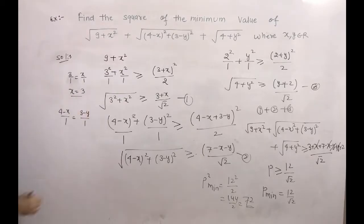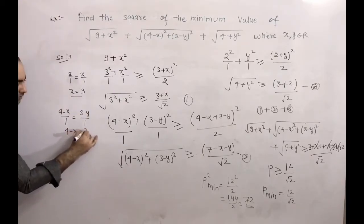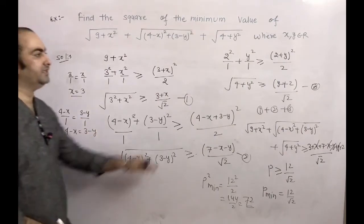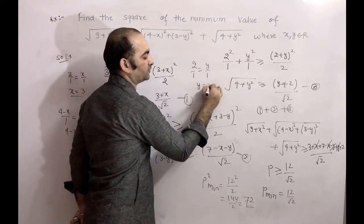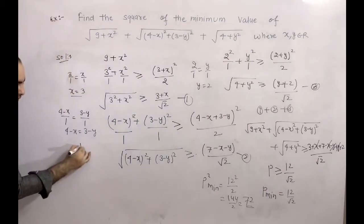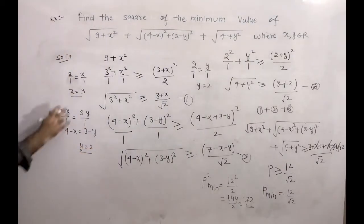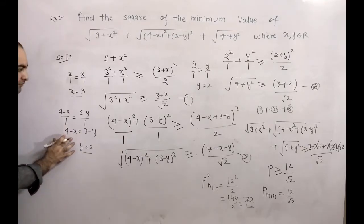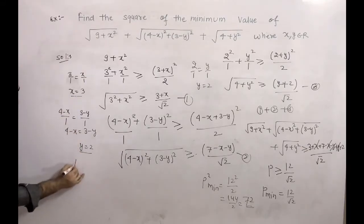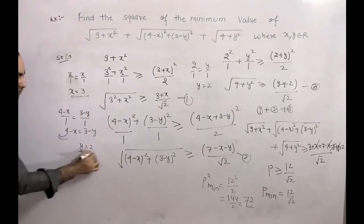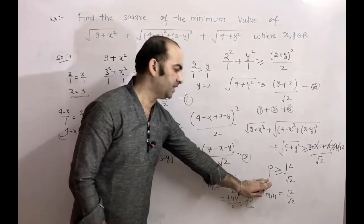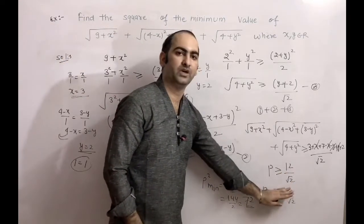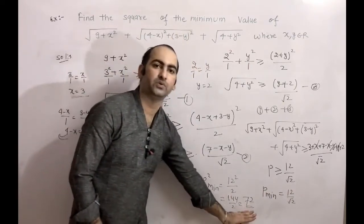From the second term's equality condition, (4-x)/1 = (3-y)/1, so 4-x = 3-y. For x=3 and y=2: 4-3=1 and 3-2=1, which are equal. So at x=3 and y=2, P achieves its minimum value of 12/√2, and the square of the minimum value is 72.